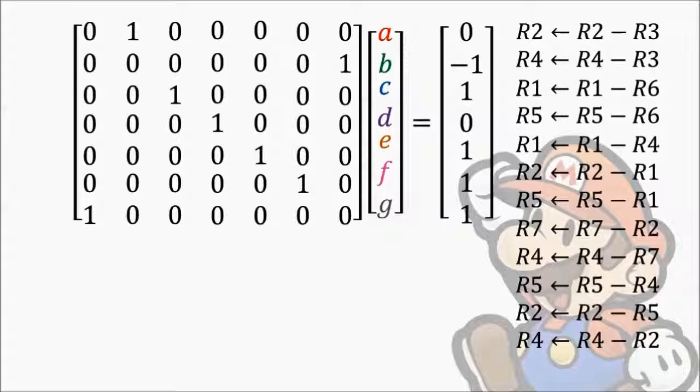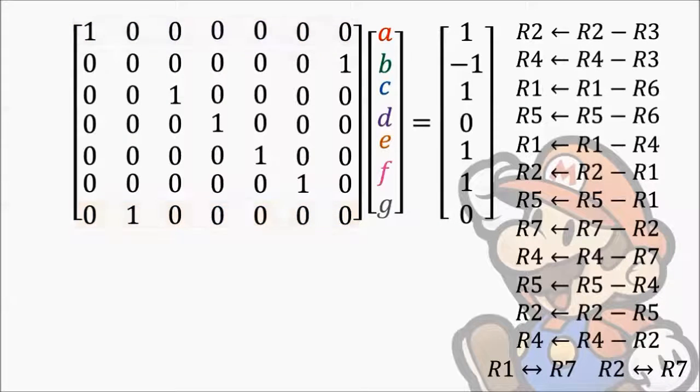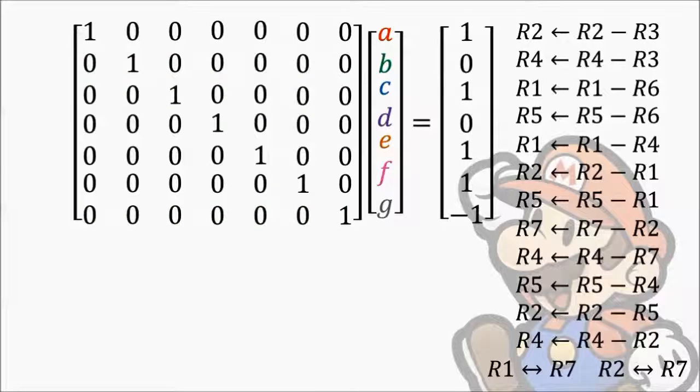Now it's just a matter of swapping the rows until we have ones along the diagonal. We can swap row 1 with row 7, and finally row 2 with row 7. This matrix is now in row echelon form.